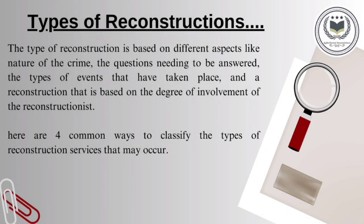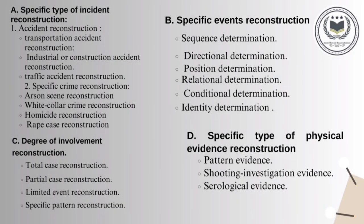Now the types of reconstruction. Types of reconstruction are classified on the basis of the nature of the crime, the questions that need to be answered, and the type of events that took place. There are four classifications. The first is specific type of incident reconstruction, which includes accident reconstruction and specific crime reconstruction. Examples of accident reconstruction are transport accidents and industrial accidents. Examples of specific crime reconstruction are arson cases, white collar cases, homicide cases, and rape cases.